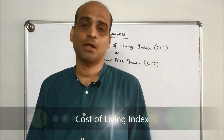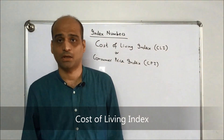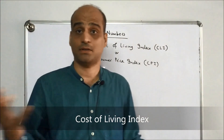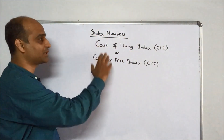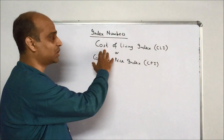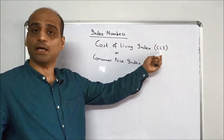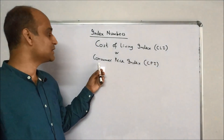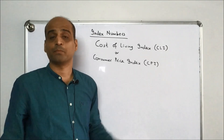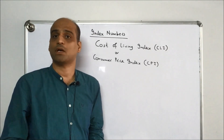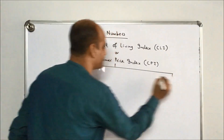Hello and welcome back. Today we are going to talk about index numbers in more detail. We are going to construct one special index called the Cost of Living Index, or CLI for short. The other name is Consumer Price Index, also denoted as CPI.